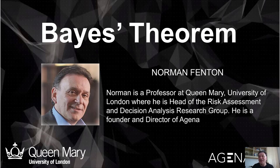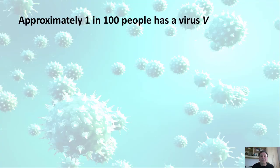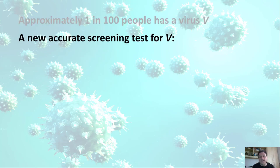Hello, my name is Norman Fenton and this is a very brief explanation of Bayes Theorem. I want you to imagine that approximately 1 in 100 people has a particular virus which we call V, and there's a new accurate screening test for this virus V.